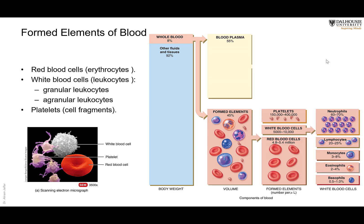Red blood cells, also called erythrocytes, are sometimes called red blood corpuscles because they are not actual cells. They were cells during their development, but then they lose their nucleus, so they are no longer considered true cells.